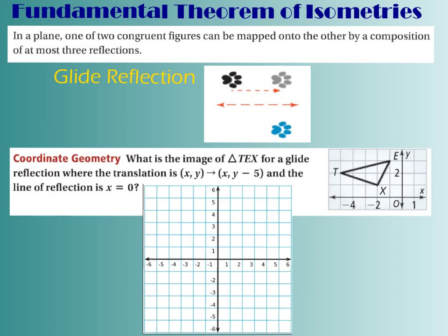There are a couple of things on this slide. First, we have the fundamental theorem of isometries, which tells us that one of two congruent figures can be mapped onto another by the composition of at most three reflections. So any transformation you see can be thought of as at most three reflections. We just learned that rotations are two reflections over intersecting lines and translations are two reflections over parallel lines. We're now going to look at glide reflection, which is where you take an image, first translate it, and then reflect it over a line.